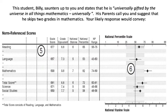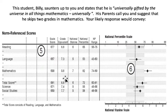Next question. This student Billy saunters up and states that he is universally gifted in all things mathematics, and his parents suggest he skips two grades in mathematics. Your likely response would convey what? The concept here is that you don't want to misinterpret grade equivalency scores. He's in seventh grade and his mathematics grade equivalent is 9.6. Parents are assuming he should be in high school freshman math. The response is that because there are content differences across grades, we don't know if he's ready for that math — we'd have to do additional testing. What we do know is that he does seventh grade math above average, performing as well as a high school freshman would. And that's all we know.